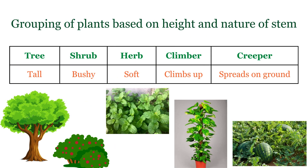So we can group plants based on height and nature of stem as: tree, shrub, herb, climber, and creeper. Trees are tall and strong plants with thick woody stems — they live for many years. For example: mango, neem, banyan. Shrubs are medium sized plants with thin woody stems and branches near the base — for example: rose, hibiscus. Herbs are small plants with soft, green, tender stems that live for a short time — for example: tulsi, mint. Climbers have weak stems and need support to climb using tendrils — for example: money plant, grapevine. Creepers have very weak stems and spread along the ground — for example: watermelon, pumpkin.